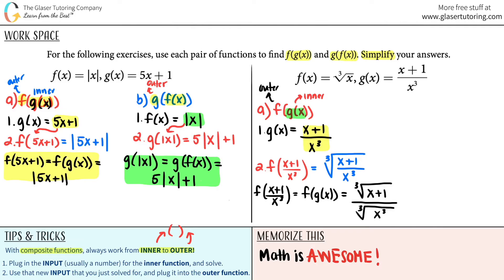We can't simplify the numerator, but a cube root and raising to the third power are inverses — they cancel. So the cube root of x cubed is just x. The simplified final answer for f of g of x is the cube root of (x plus 1), all over x.